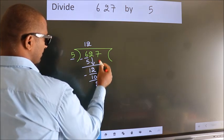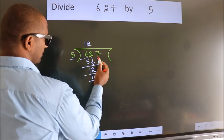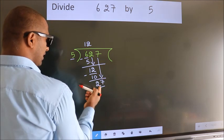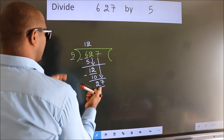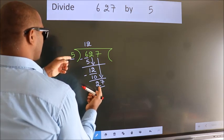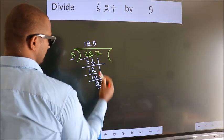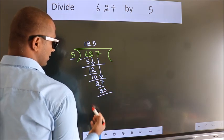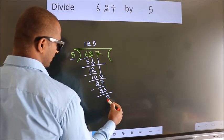After this, bring down the beside number. So 7 down, so 27. A number close to 27 in 5 table is 5 fives 25. Now we subtract, we get 2.